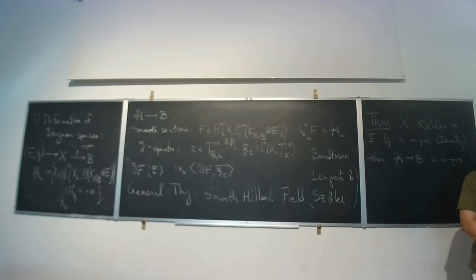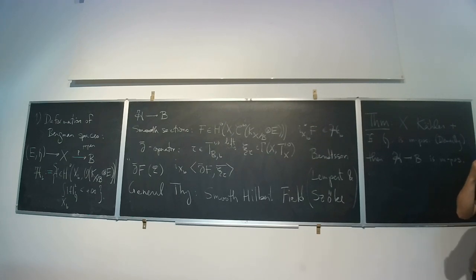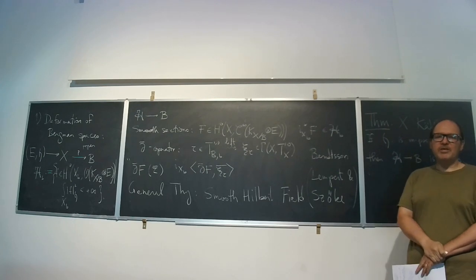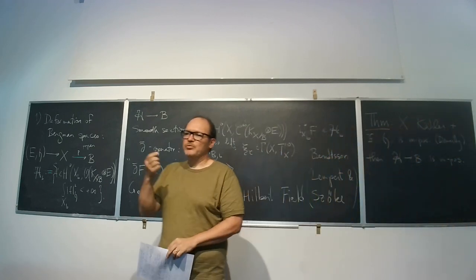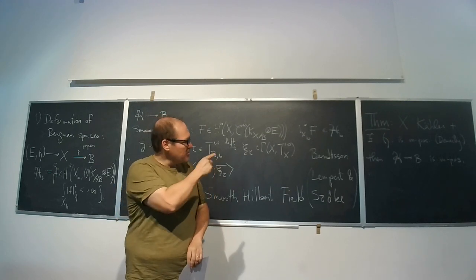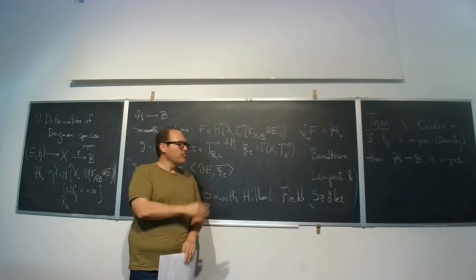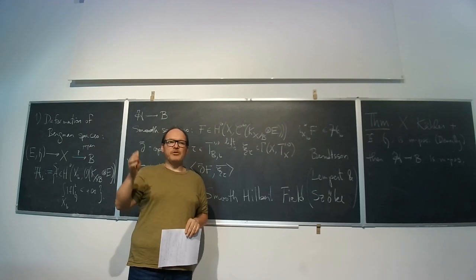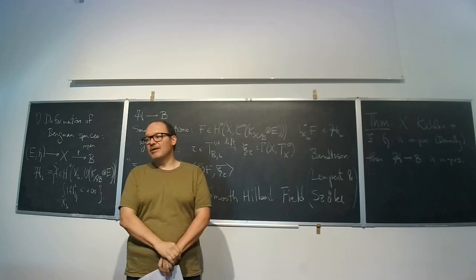I'll say in words what m-positivity is. You can compute the curvature of h, and use it to define a quadratic form on the tensor product of 1-0 tangent vectors with the fiber of the vector bundle E. Those tensors can be thought of as linear maps from the cotangent bundle to the fiber, and you can look at their rank. If a tensor has rank one, it's an indecomposable tensor. One-positivity — positivity on all rank-one tensors — is the same as Griffiths positivity. Positivity for all m is Nakano positivity, and there are all the values of m in between.